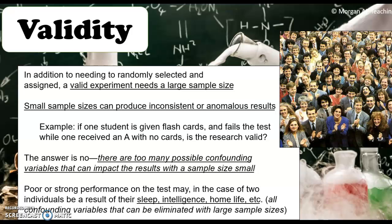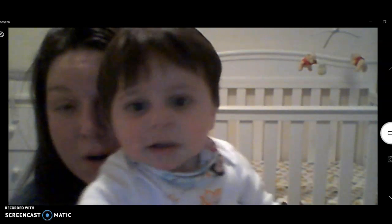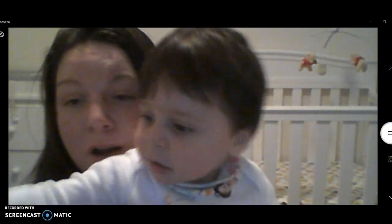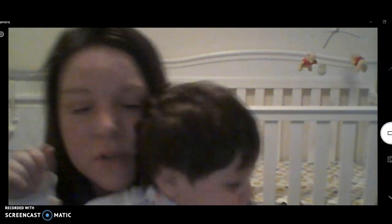You've done the experiment — now you have to figure out if it's valid. A valid experiment needs a large sample size. A small sample size can produce inconsistent or anomalous results. If one student is given a flashcard and fails, and one receives an A with no cards, that's not valid research because the sample size is way too small and there are too many confounding variables. Poor or strong performance on a test could be due to sleep, intelligence, etc. In order for your experiment to be valid, you need a substantial sample size. That wraps up research and experiments — I hope that was helpful!